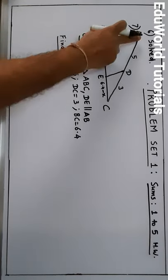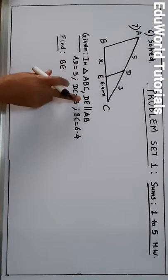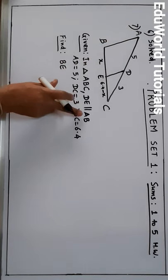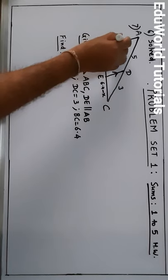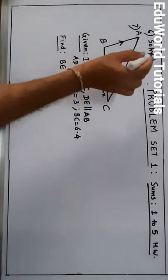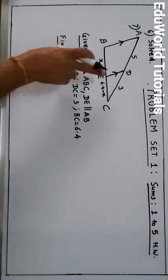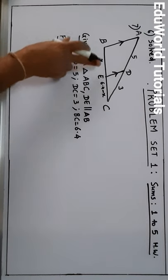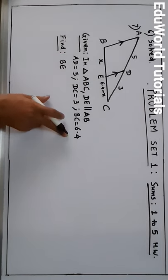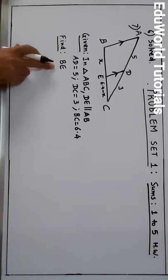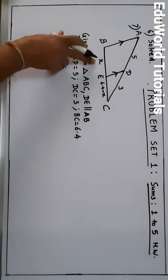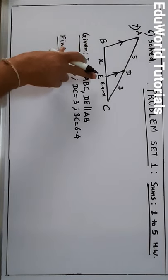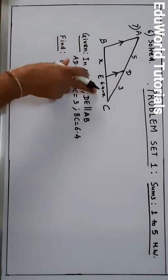Given: in triangle ABC, segment DE is parallel to side AB. AD is 5, DC is 3, and BC is 6.4. We have to find BE. In advance, I have written BE to be equal to X. So EC will be 6.4 minus X.